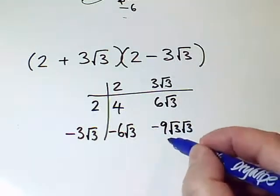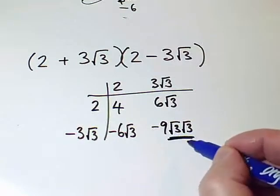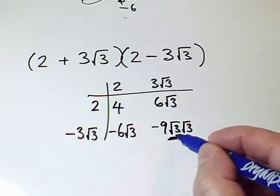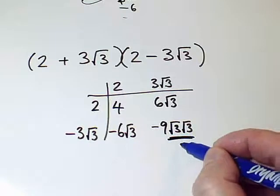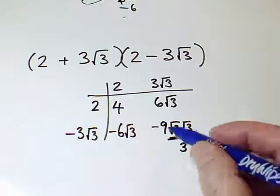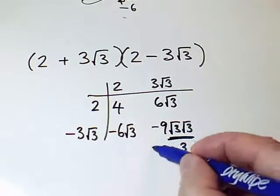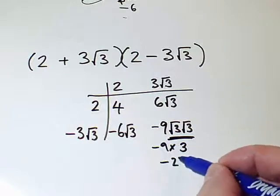But the next step is to look at the root 3 times root 3 and think, well, its job is to equal square root times itself. Its job is to equal 3, the number it's the square root of. So this term down here is actually minus 9 times 3, which is minus 27.